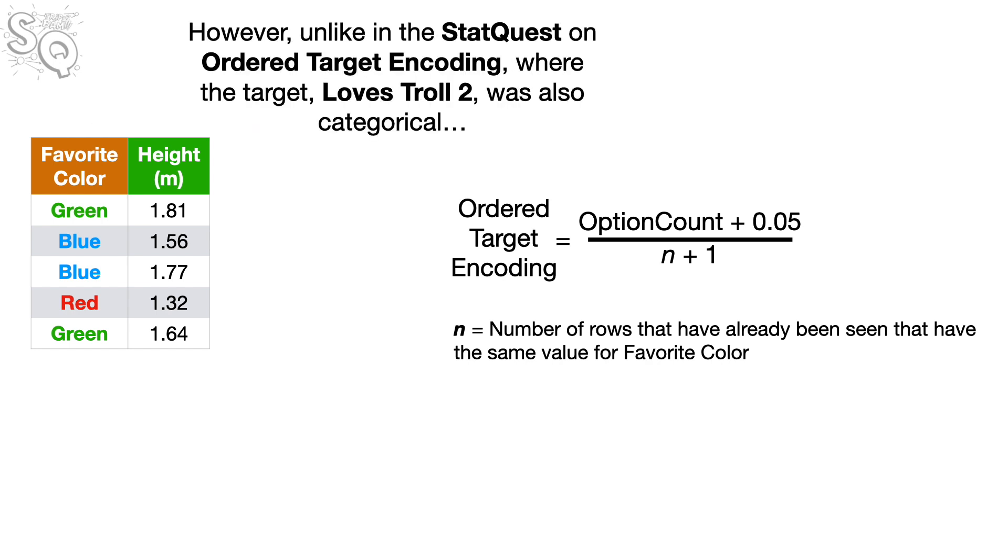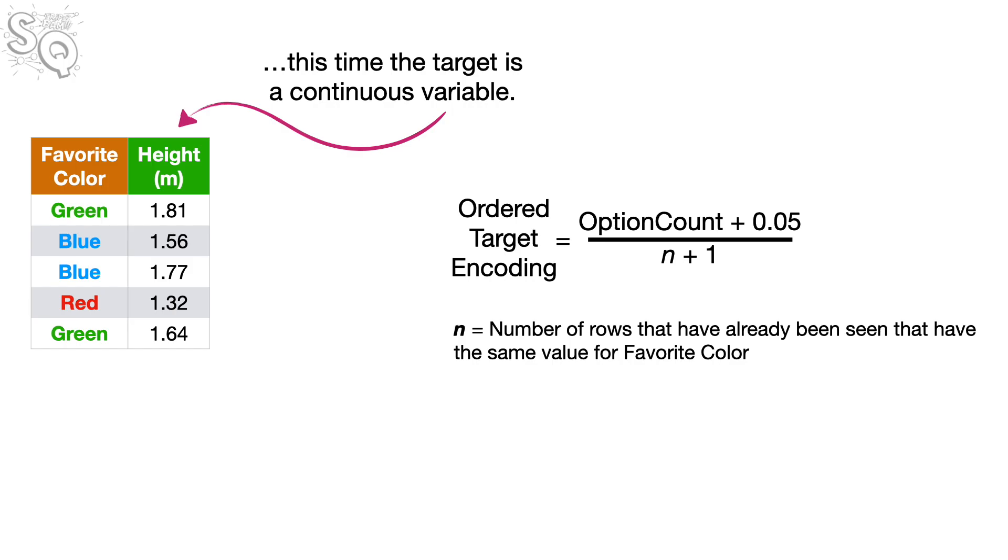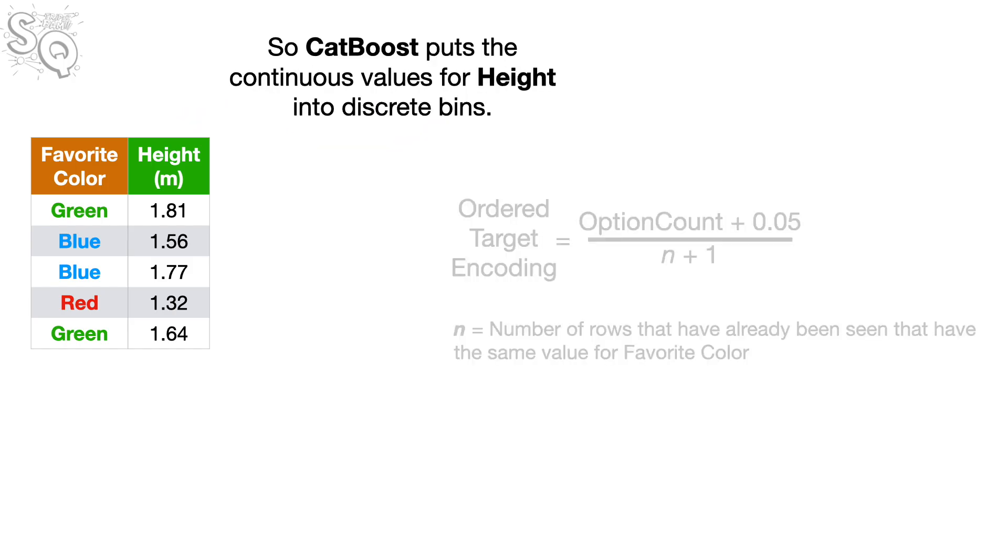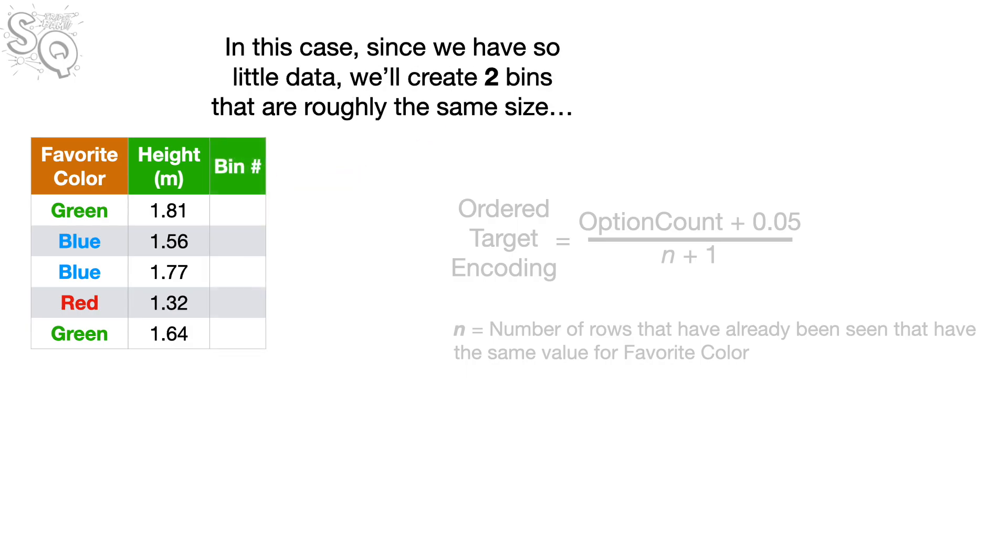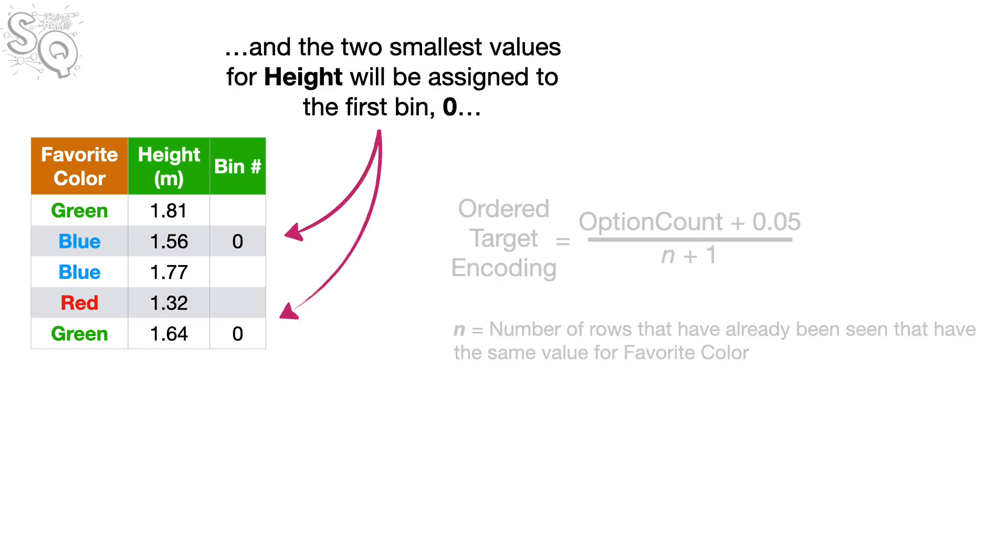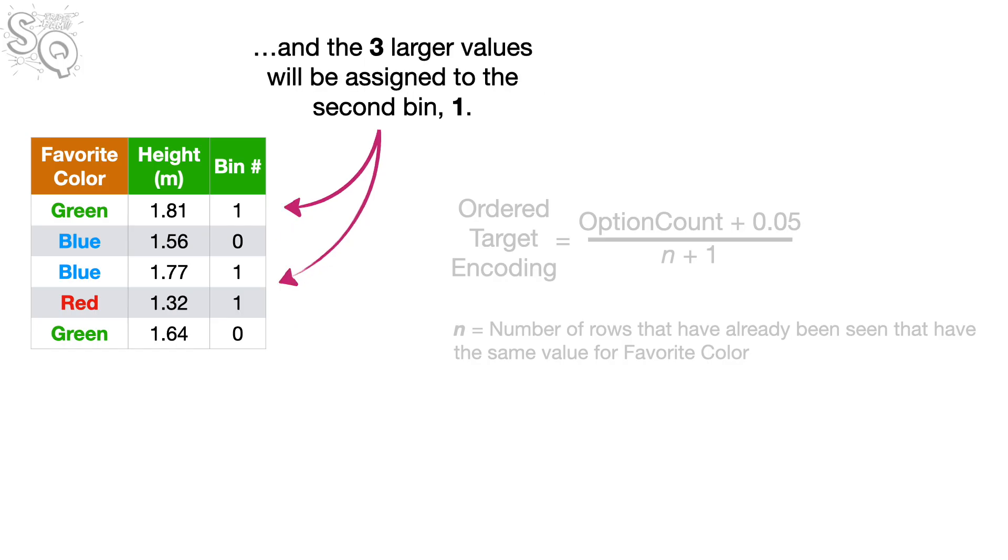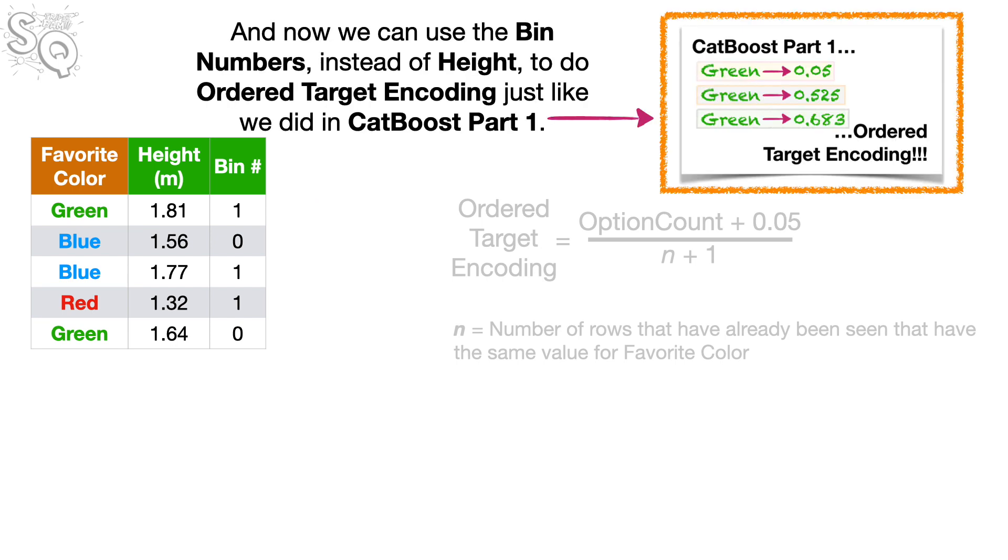However, unlike in the StatQuest on Ordered Target Encoding, where the target, LovesTroll2, was also categorical, this time, the target is a continuous variable, so CatBoost puts the continuous values for height into discrete bins. In this case, since we have so little data, we'll create two bins that are roughly the same size. The two smallest values for height will be assigned to the first bin, 0. And the three larger values will be assigned to the second bin, 1.